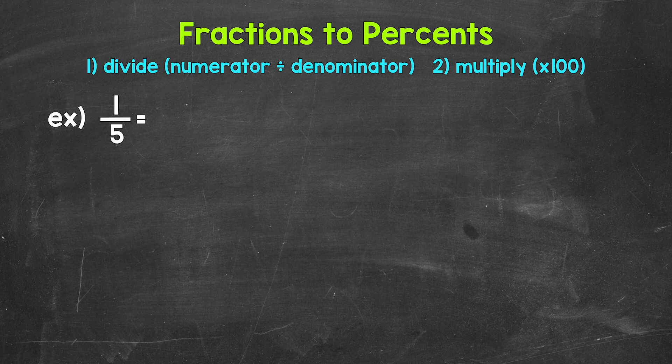So we need to start by converting this to a decimal by dividing. For 1 fifth, we can set this up as one divided by five, and now we can work through the division process.